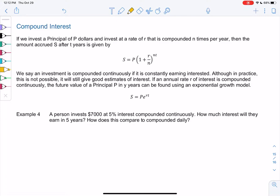If we invest a principal, this is the amount of money we invest in an account of P dollars and invest at a rate of R that is compounded n times per year. So this is how often you get interest, how often interest is calculated.